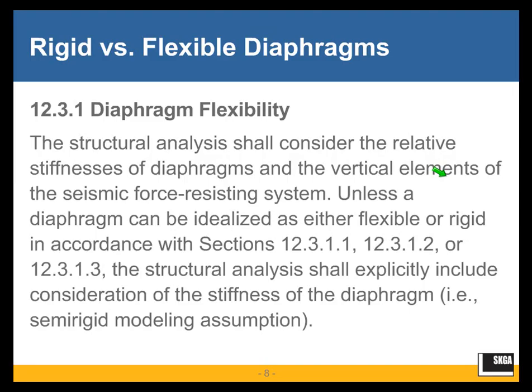A very important ASCE 7 requirement. This is ASCE 7-10 Section 2031. Structural analysis shall consider the relative stiffnesses of diaphragms and the vertical elements of the seismic force resisting system.